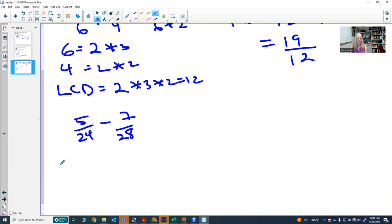So first let's find the common denominator. 24 in its prime factorization is 2 times 2 times 2 times 3.